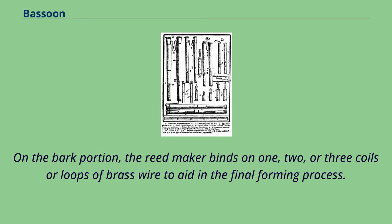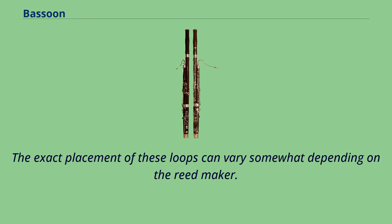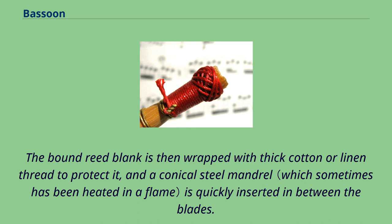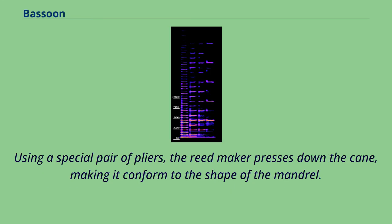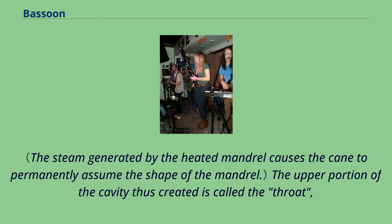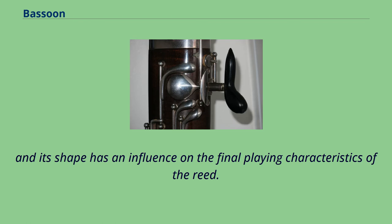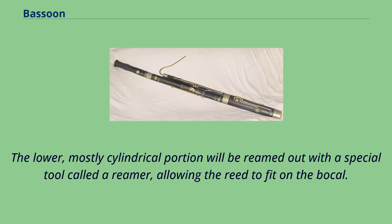On the bark portion, the reed maker binds one, two, or three coils or loops of brass wire to aid in the final forming process. The exact placement of these loops can vary depending on the reed maker. The bound reed blank is then wrapped with thick cotton or linen thread, and a conical steel mandrel is quickly inserted between the blades. Using a special pair of pliers, the reed maker presses down the cane, making it conform to the shape of the mandrel. The upper portion of the cavity thus created is called the throat, and its shape influences the final playing characteristics of the reed. The lower, mostly cylindrical portion will be reamed out with a special tool called a reamer, allowing the reed to fit on the bocal.